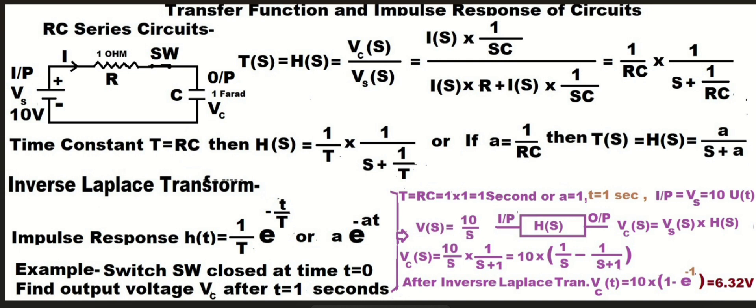The output voltage Vc after t equals 1 second is found after calculation to be 6.32 volts DC.